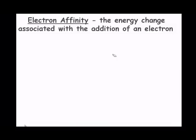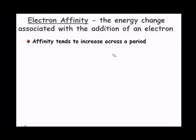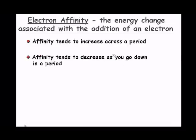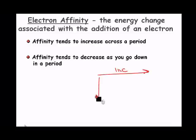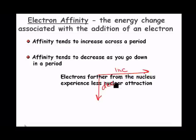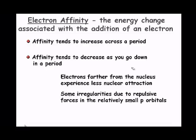Electron affinity is the energy change associated with the addition of an electron. Affinity tends to increase across a period and decrease as you go down a group. Electrons further away from the nucleus experience less nuclear attraction, so we're going to have a lower affinity. There are some irregularities due to repulsive forces in relatively small p orbitals — in our p sub-level, if we have p orbitals that are a little bit smaller, we'll see some irregularities.